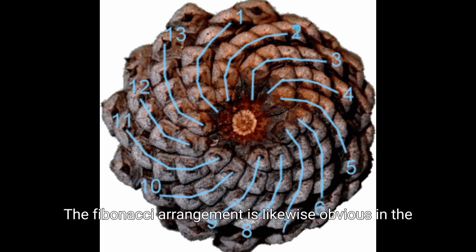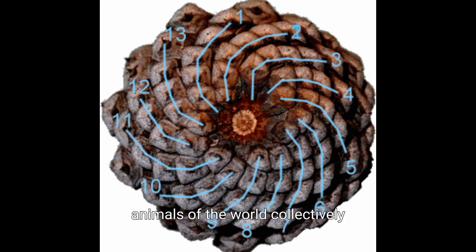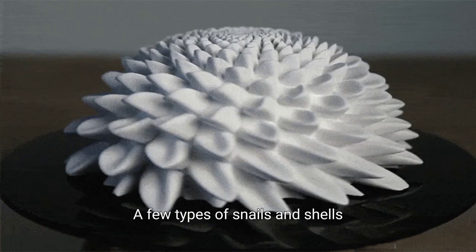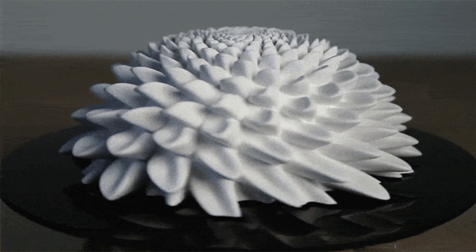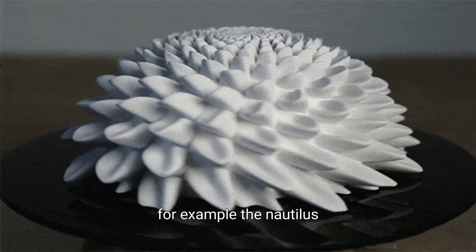The Fibonacci arrangement is likewise obvious in the animals of the world collectively. A few types of snails and shells, for example, the nautilus,